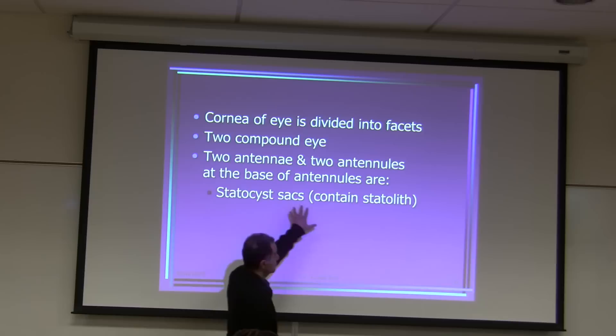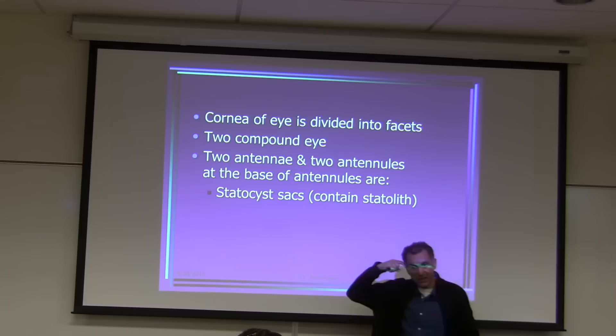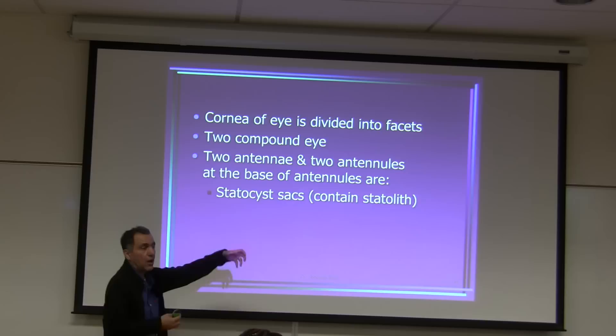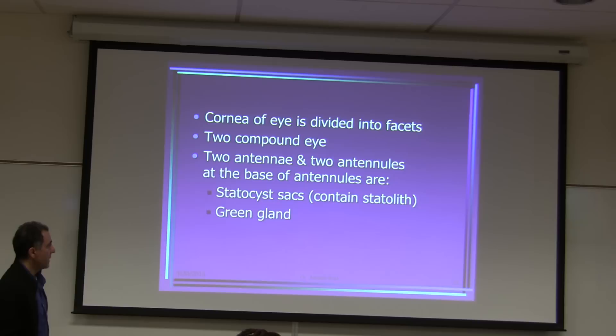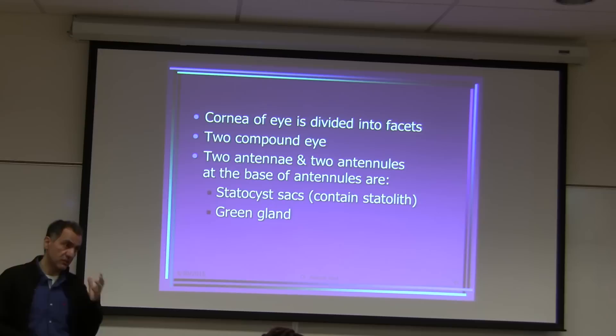The statocyst is a structure used for balance. When the animals swim, they must balance themselves. We have the same structure — the statolith — in our ears, which allows us to balance ourselves. The statocyst sac is underneath the antenna. The green gland is in the same area; it is called the green gland because when you freshly dissect the animal, you see it is green. It is part of the excretory system.